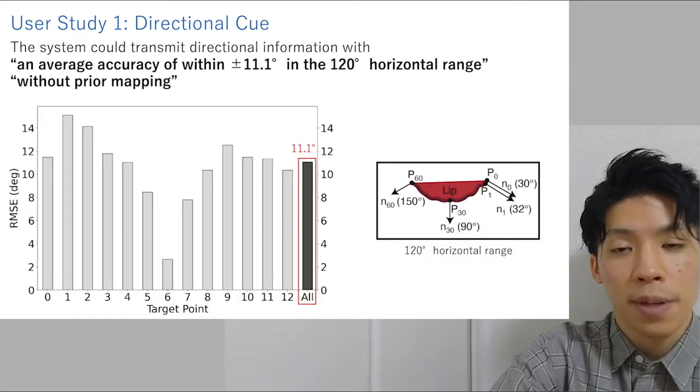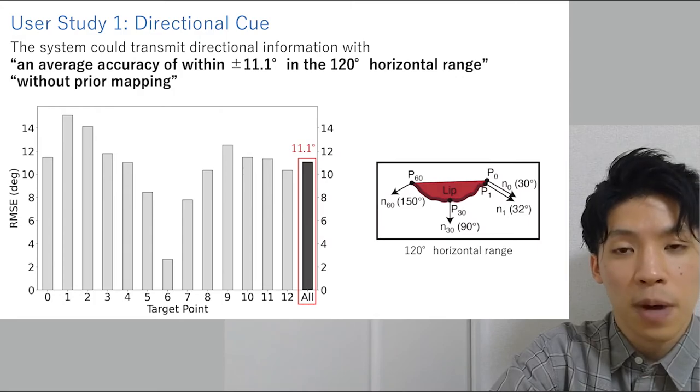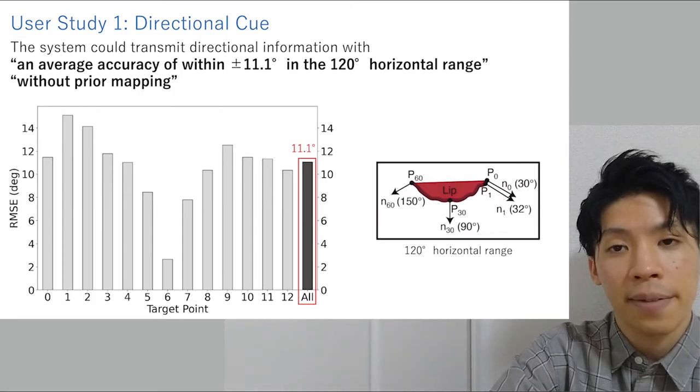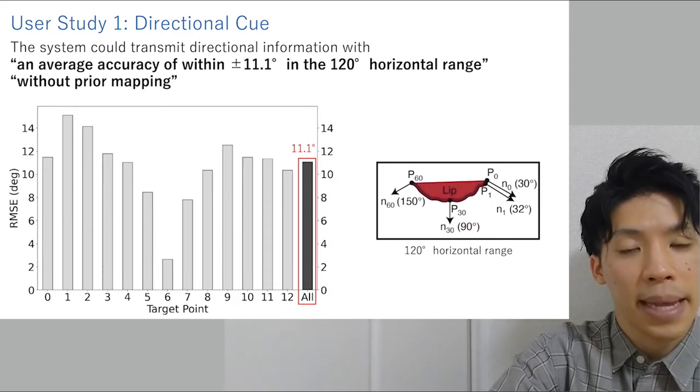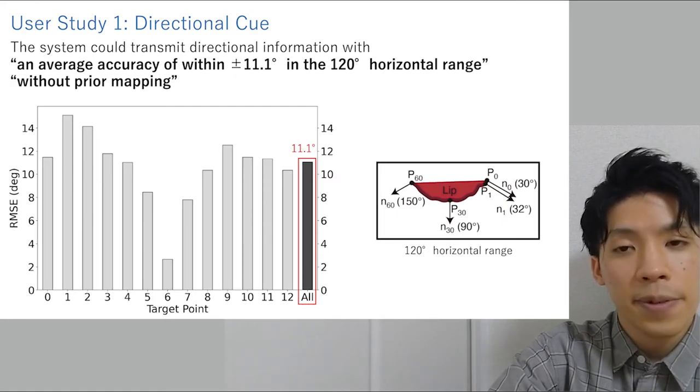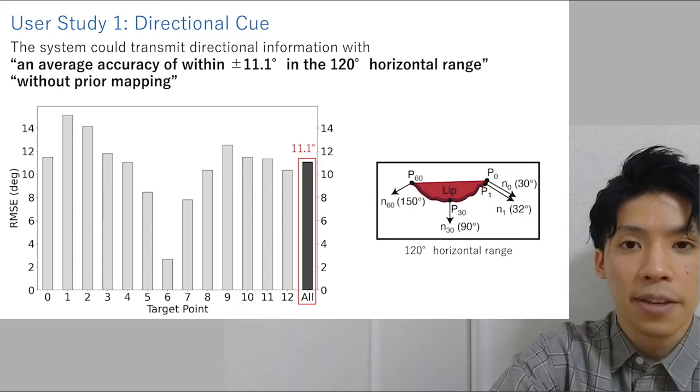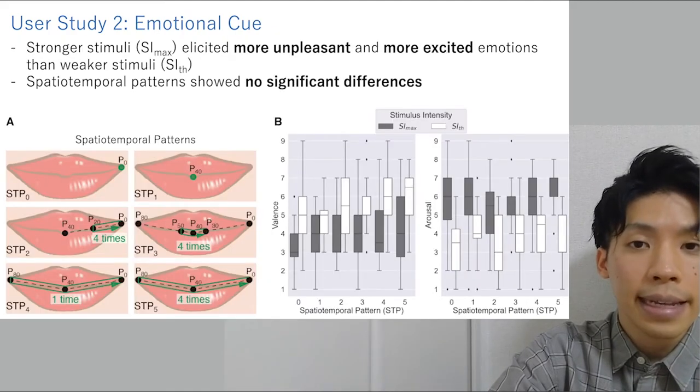As the experimental result, the system could transmit directional information with an average accuracy of within ±11.1 degrees in the 120 degrees horizontal range without prior mapping. Considering the human's field of view, this result means that the system could transmit the direction with sufficient accuracy.